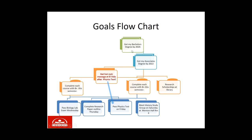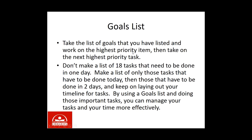You might get your associate's degree, and long-term you might get your bachelor's degree. Take the list of goals and work on the highest priority item first, then the next highest. Don't make a list of 18 things to do in one day — only list tasks that have to be done today, then those due in two days. By using a goals list you can manage your tasks and time more effectively.